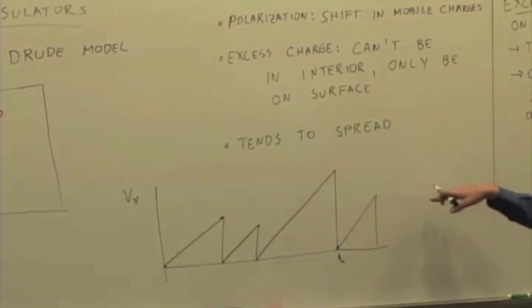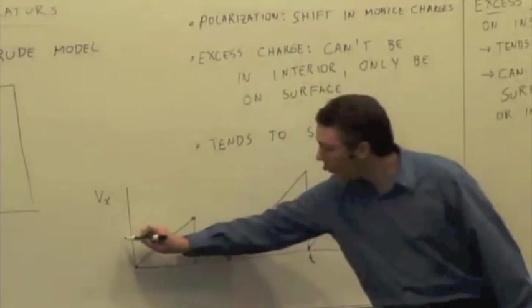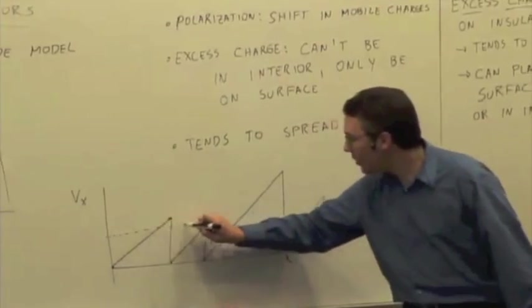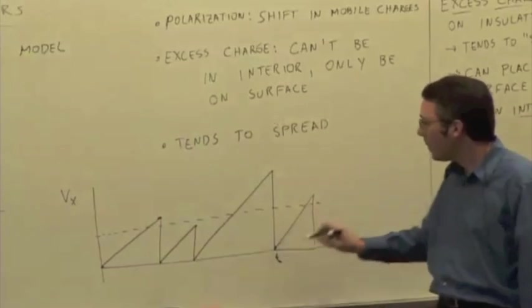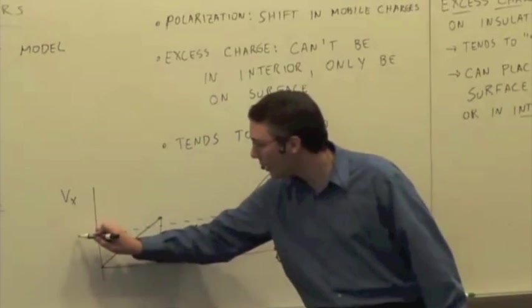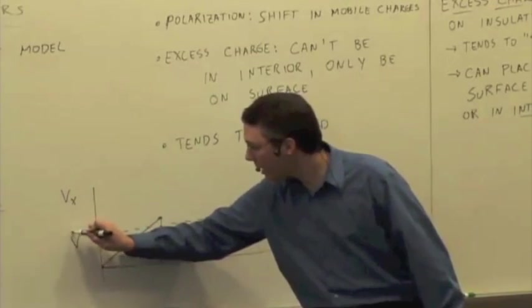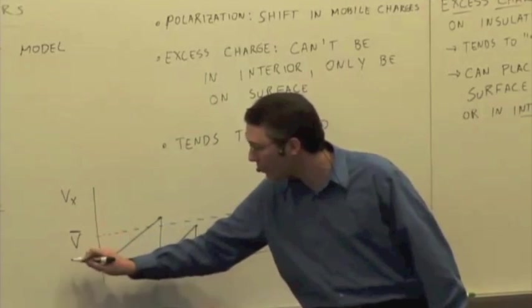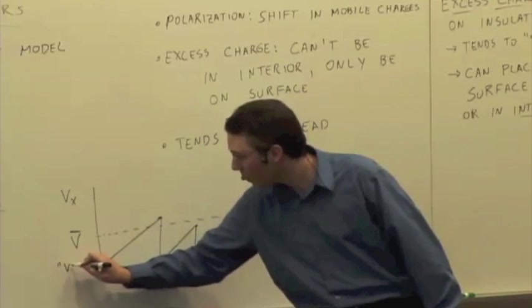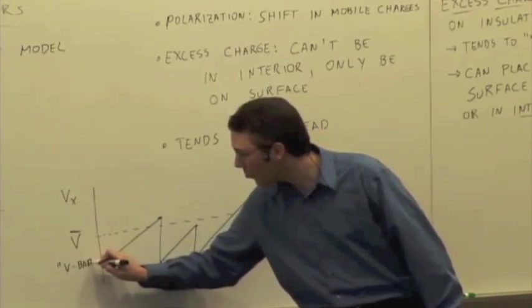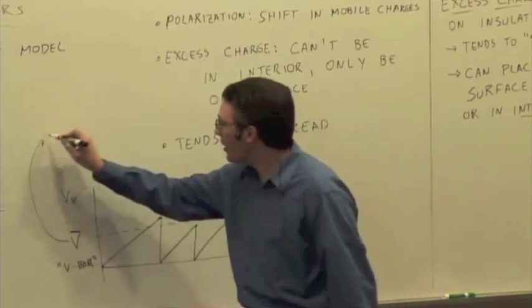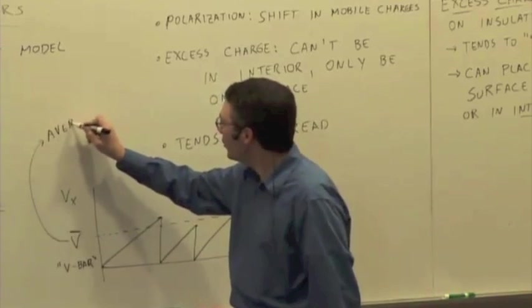If I were to average all this out, we'd find some average speed for the mobile electron. And this average speed, I'm going to call V bar, V with a little bar over it.